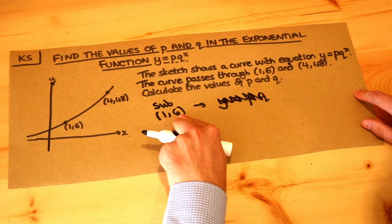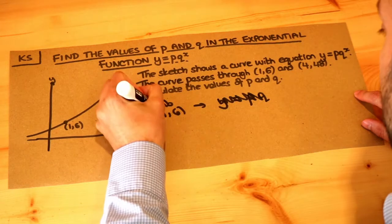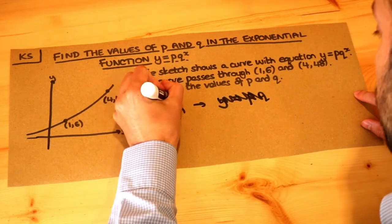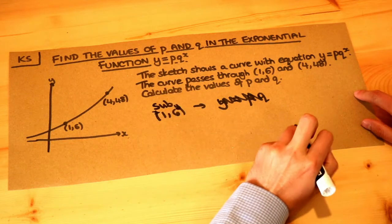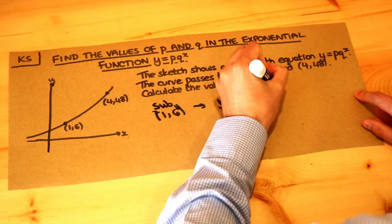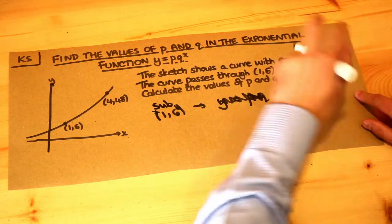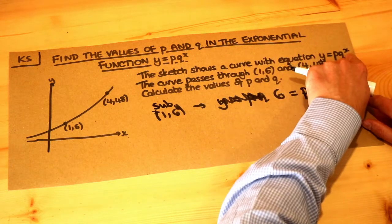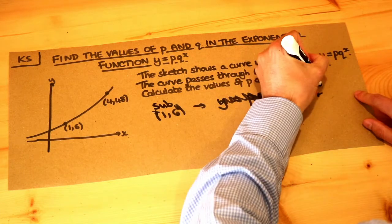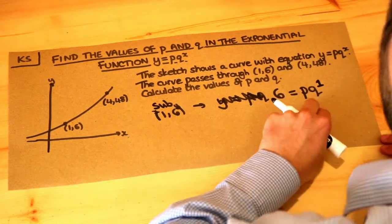So if we substitute in 1 and 6 into this equation, the 1 is the x and the 6 is the y. Then we get y, which is 6, equals p, which we don't know yet, times q, which we don't know yet, to the power of x, which we know is 1 in this particular case. So that gives us our first equation.